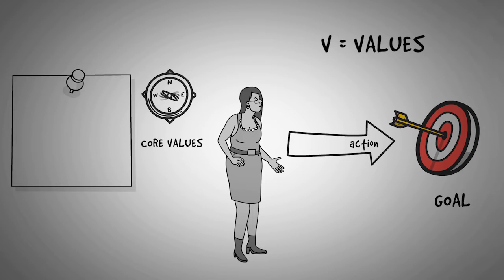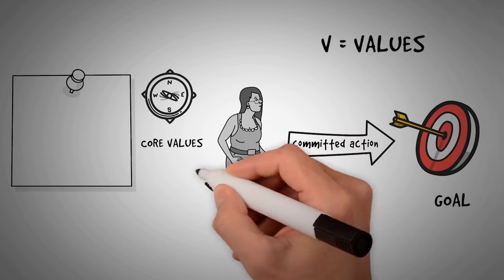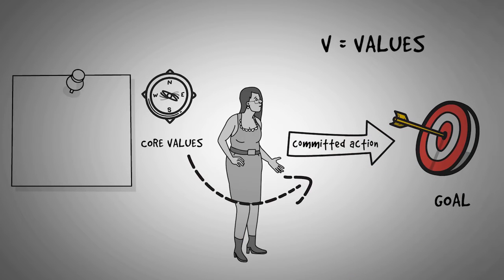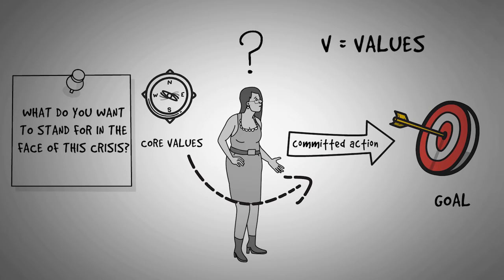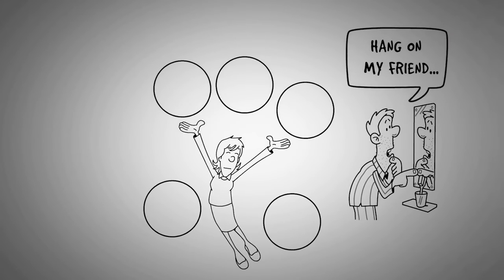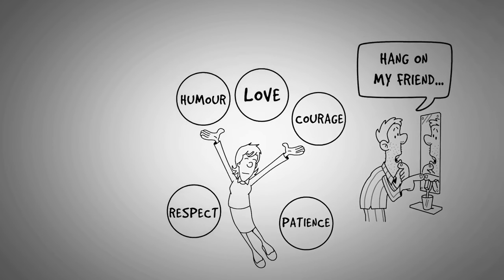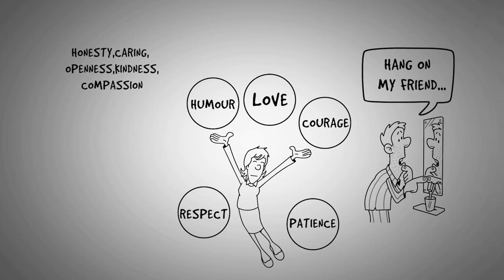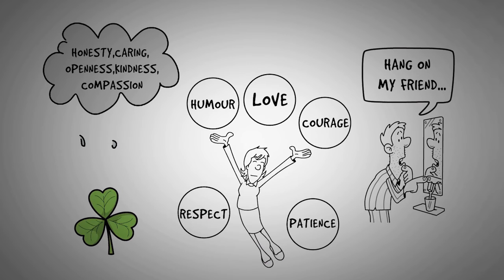V is for values. Committed action should be guided by your core values. What do you want to stand for in the face of this crisis? What sort of person do you want to be as you go through this? How do you want to treat yourself and others? Your values might include love, respect, humor, patience, courage, honesty, caring, openness, kindness, compassion, or numerous others. Look for ways to sprinkle your values into your day and let them guide and motivate your actions.